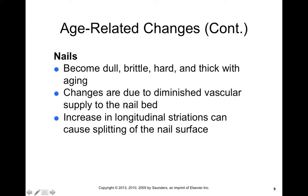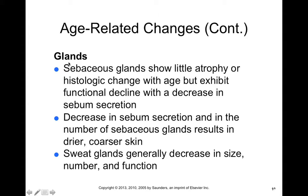Our skin glands also become less active, in part due to atrophy. There's a decrease in the secretion of sebum, which means elderly individuals' skin will typically be drier and coarser. Sweat glands also generally decrease in size, number, and function so that the elderly have difficulty regulating body temperature when they're too warm.